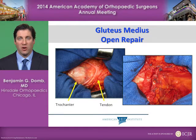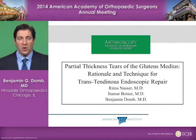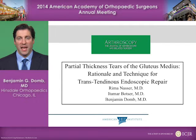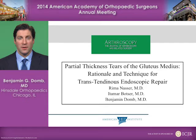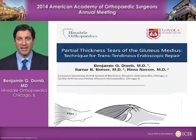This required a large open repair with margin convergence and a many-anchored repair. We've described the endoscopic and arthroscopic techniques for gluteus medius repairs, both for partial thickness tears and for full thickness tears. Partial thickness tears may be approached through the transtendinous endoscopic approach. The following video will demonstrate the endoscopic transtendinous technique.